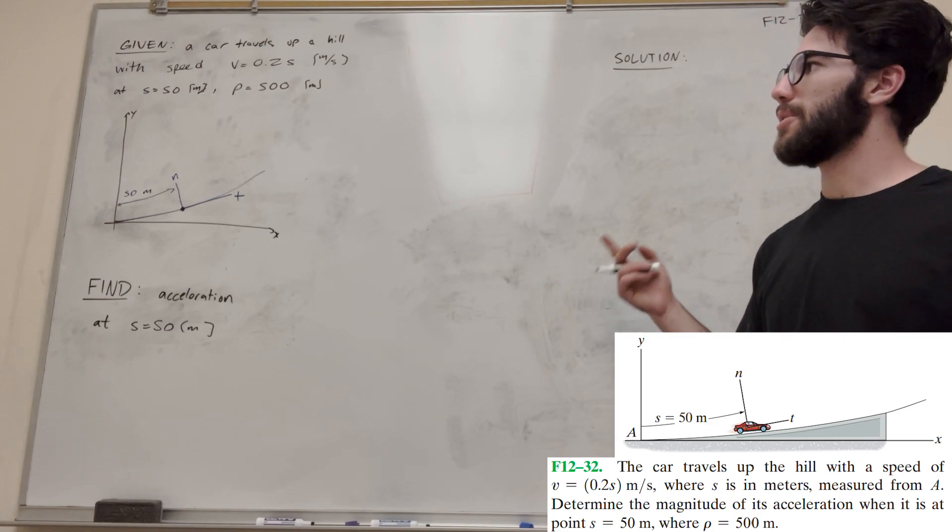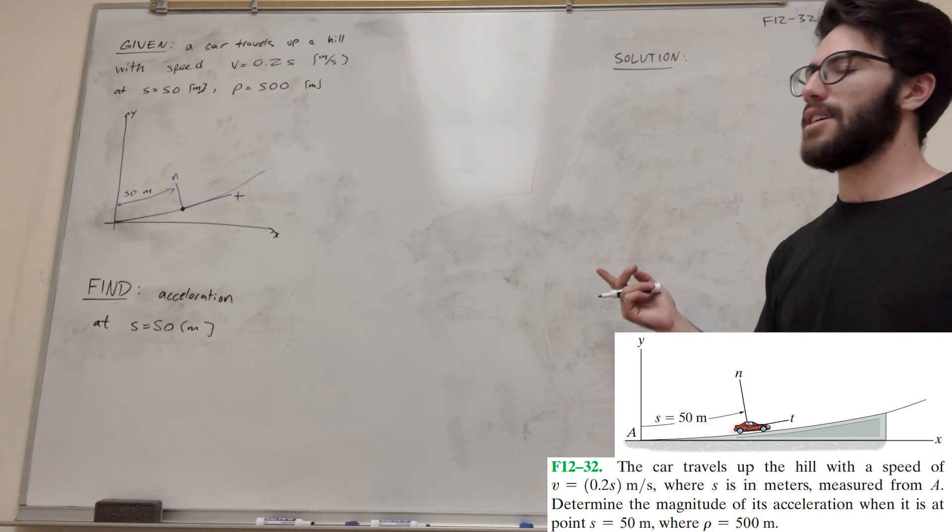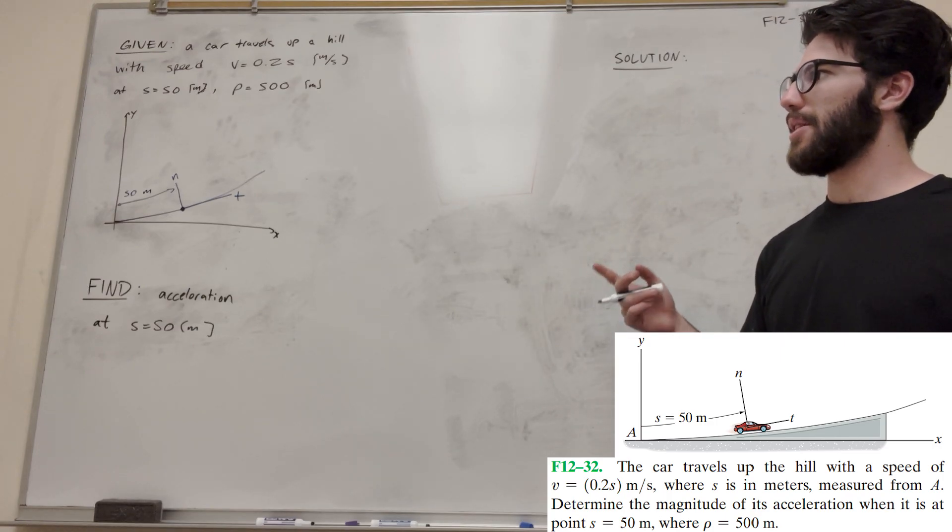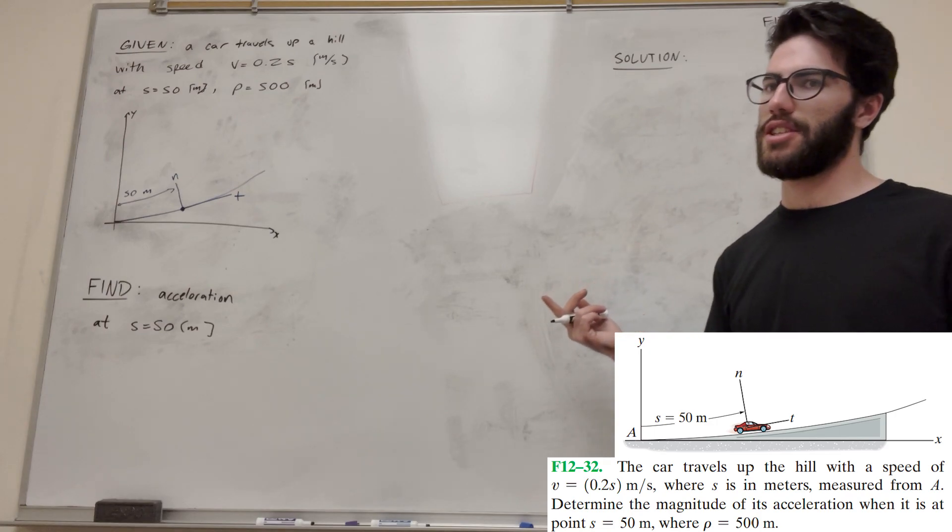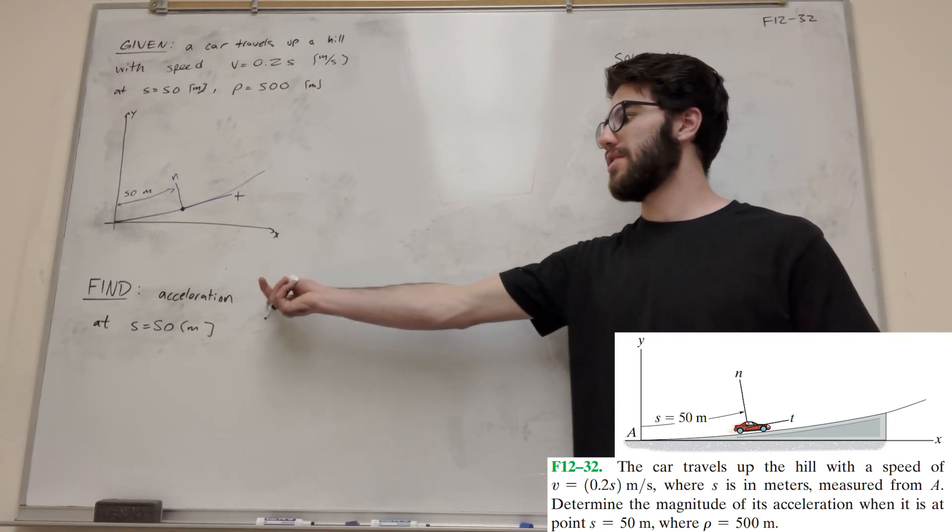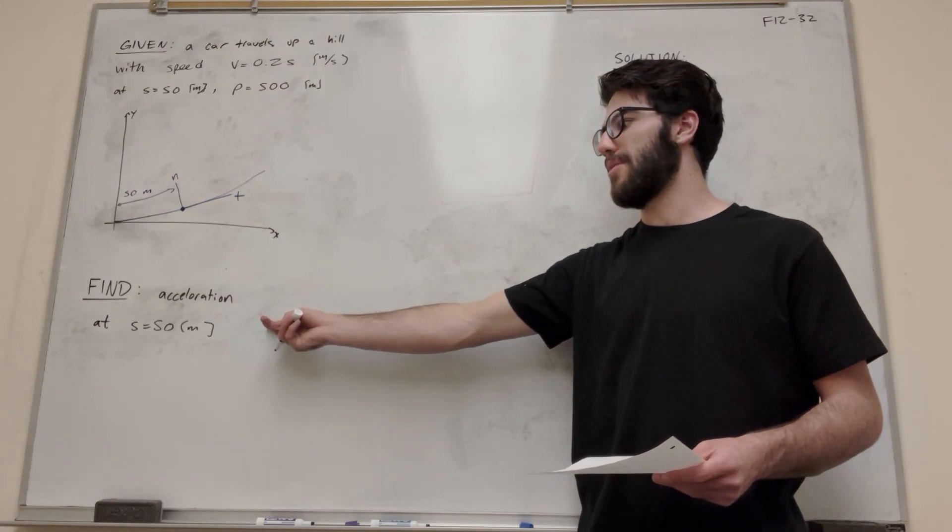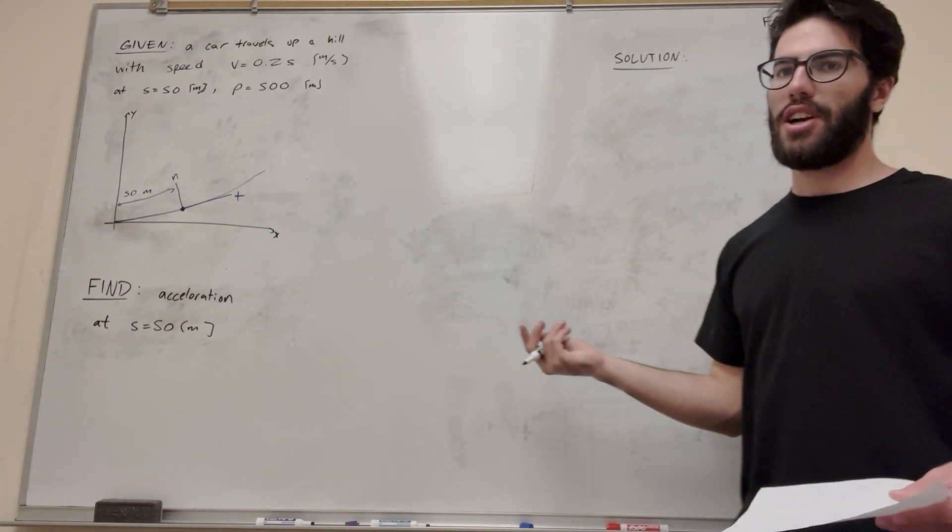So we have a car that's traveling up a hill with a speed of 0.2s meters per second, and then we're given that the radius of curvature is 500 at that point, and our goal is to find the acceleration at 50 meters. So here's our little diagram, and let's get started.